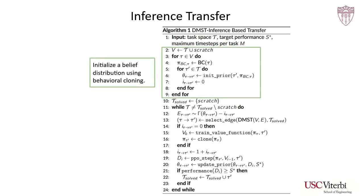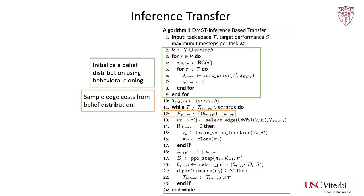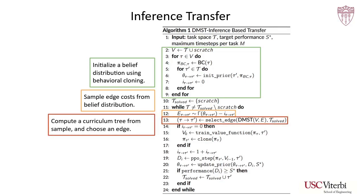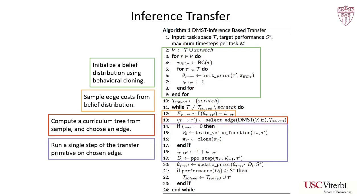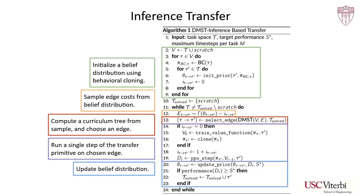This algorithm begins by using behavioral cloning to train a weak policy for each task, and then evaluates those policies on all other tasks in order to form an initial belief across the values of the transfer cost matrix. Then, while the algorithm hasn't solved all of the tasks, the algorithm repeatedly samples edge costs from our belief distribution, computes a curriculum tree from that sample of edge costs, chooses an edge from that tree, runs a single step of our transfer primitive on the chosen edge, and finally updates our belief distribution.